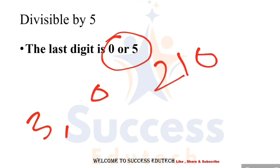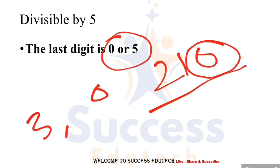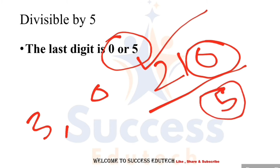To check if a number is divisible by 5: if your last digit number is 0 or 5, then it is completely divisible by 5.